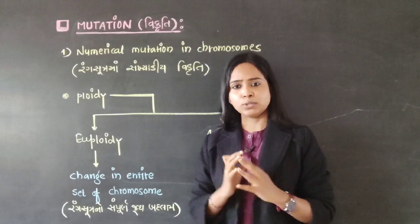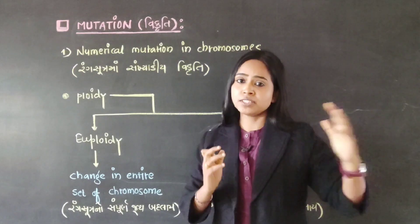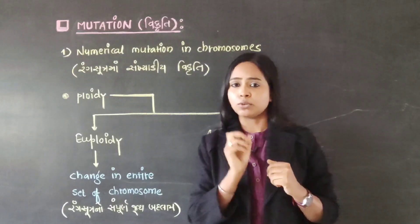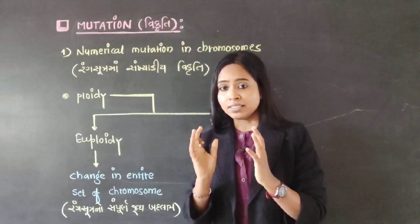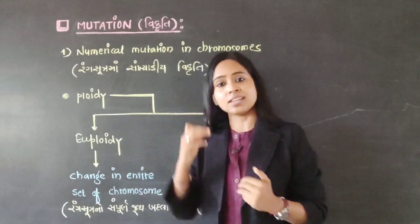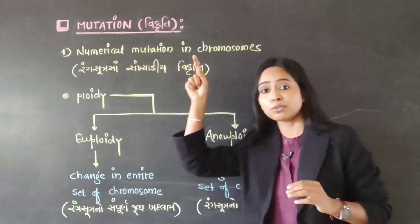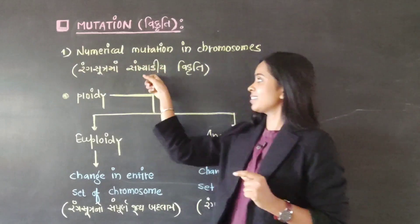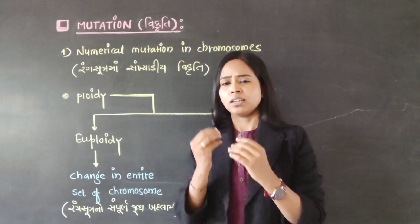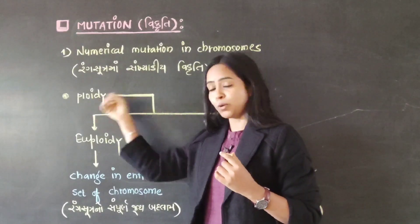If you talk about any species, you will find a common set of chromosomes, and you will find a different set in a different species. This is the basic term of the chromosome, which we know by the name Ploidy.